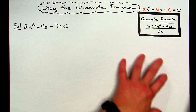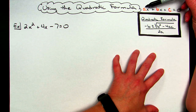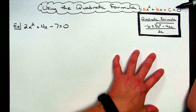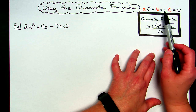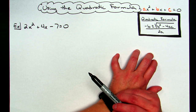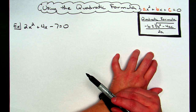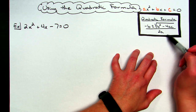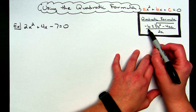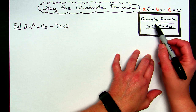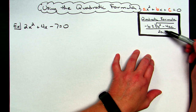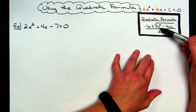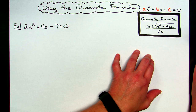A quadratic equation is ax squared plus bx plus c equals zero. The a and the b are the coefficients, and c is a constant. Those will be the numbers we plug into our formula. The quadratic formula — which you need to memorize — is negative b plus or minus the square root of b squared minus 4ac, all over 2a, where a, b, and c come from the equation you are solving.